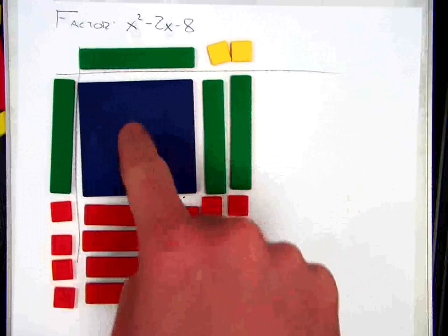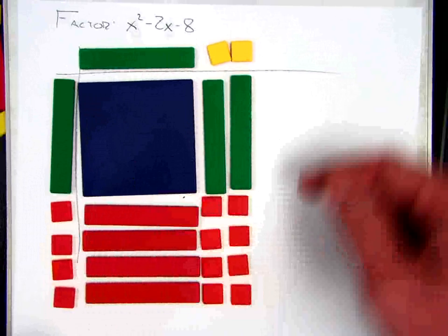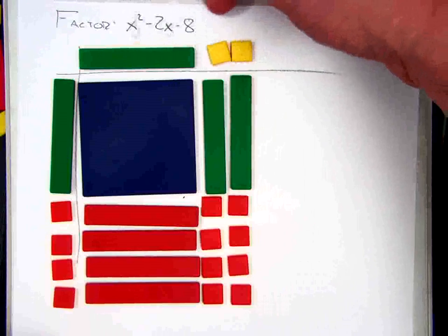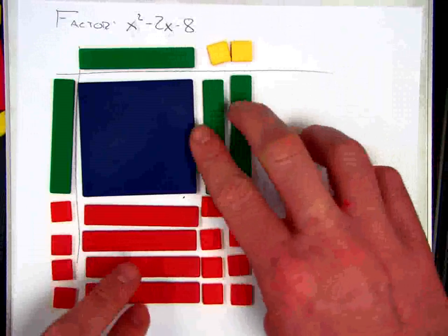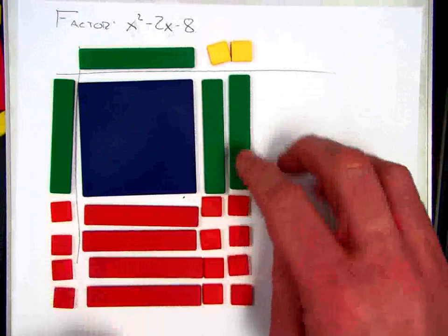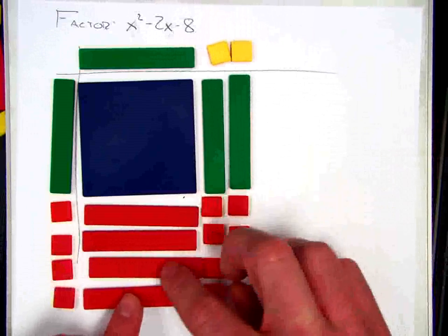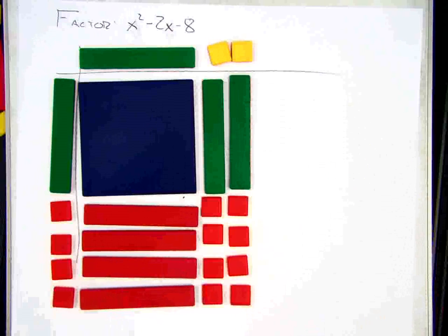And so, although it doesn't look like it, my product right here is still representative of x squared minus 2x minus 8, but I had to add a couple of those zero pairs. Or in other words, a green tile and a red tile that cancel out or add to zero.